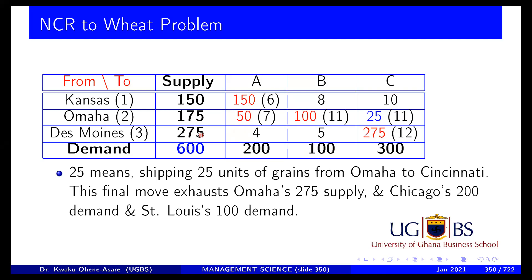After exhausting Omaha, we go to Des Moines with 275 units. By now Chicago's 200 and St. Louis's 100 have been satisfied. So we send all 275 from Des Moines to Cincinnati. Cincinnati already has 25 from Omaha, so adding 275 gives the full 300 demanded. This 25 means we shipped 25 units of grain from Omaha to Cincinnati. The Northwest corner rule is now complete.